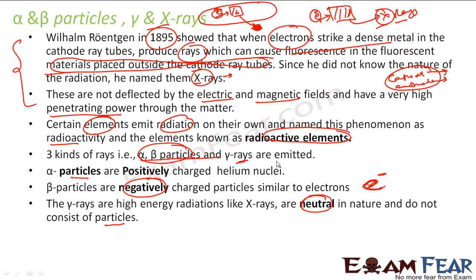Alpha particles are like anode rays, positively charged helium nuclei, deflected by electric and magnetic fields. Beta particles are like cathode rays, negatively charged electrons, also deflected by electric and magnetic fields. Gamma rays are like x-rays, neutral.